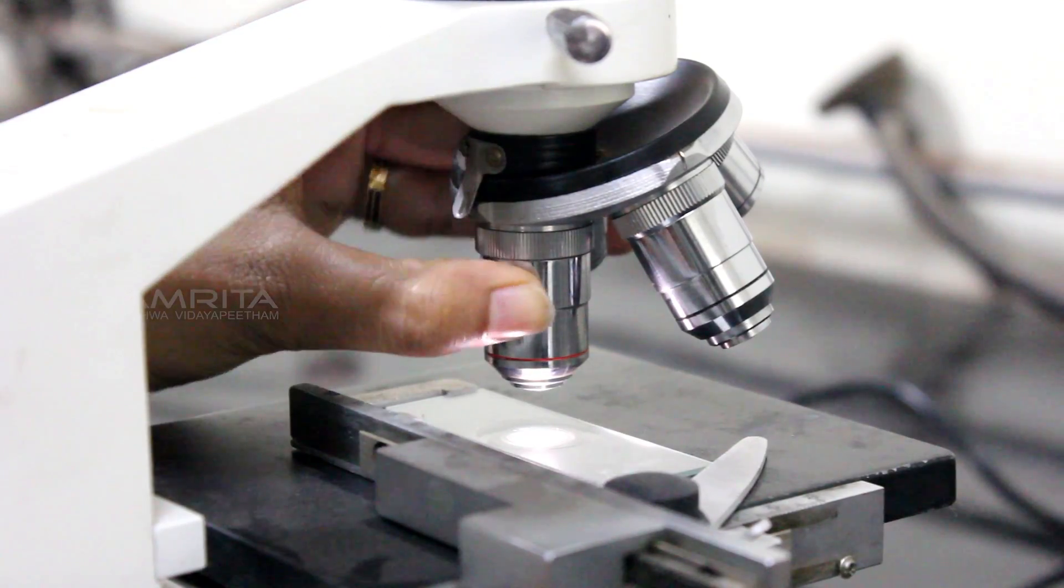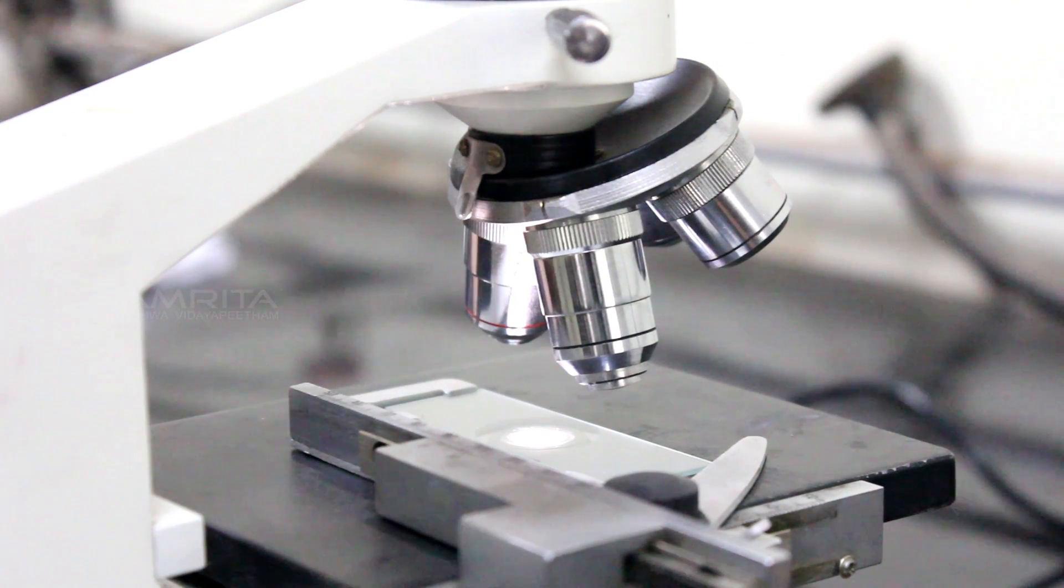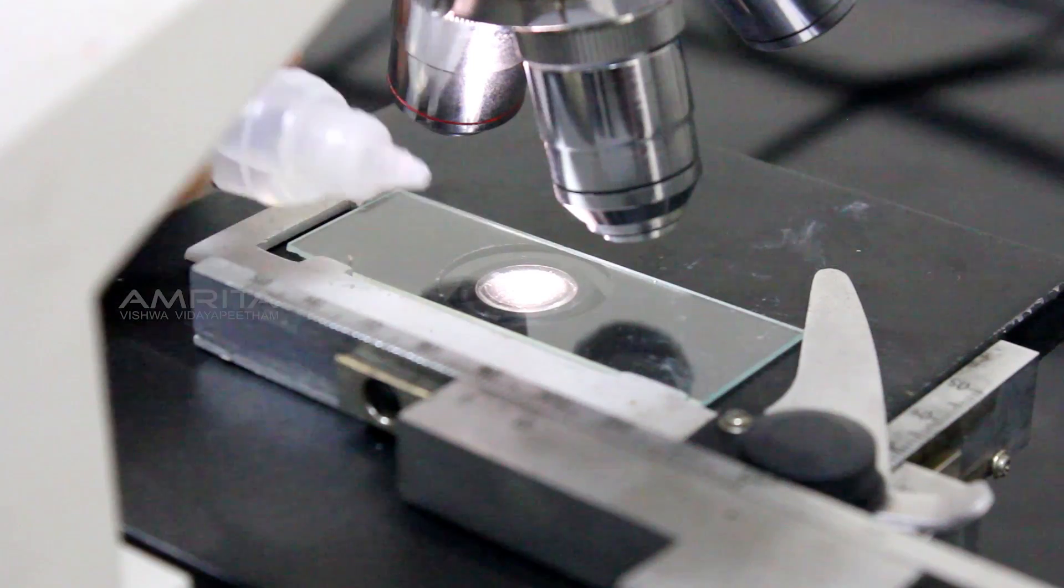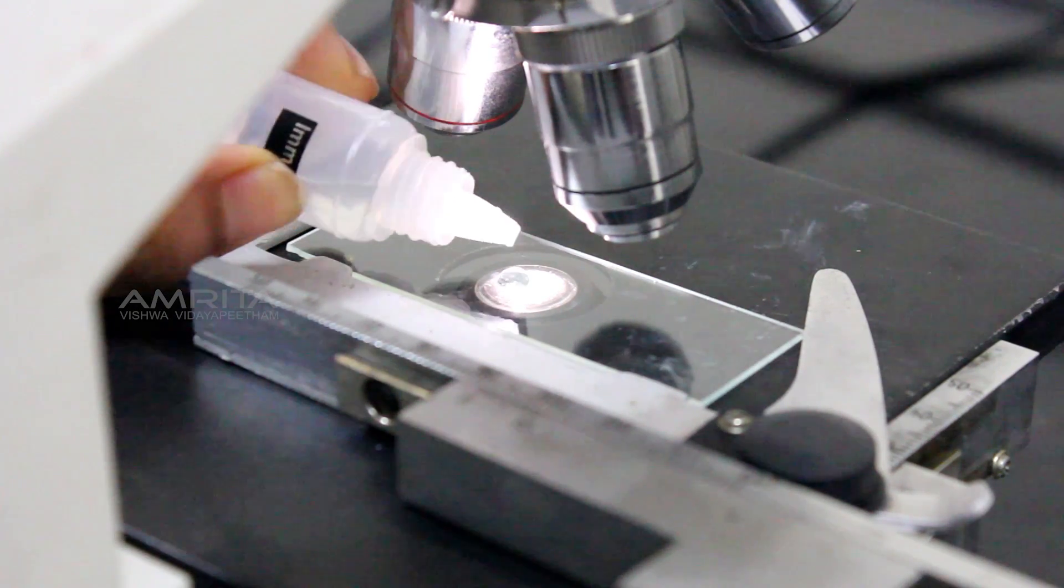Then rotate the nose piece of the microscope in such a way that the specimen is in between 40x and 100x objectives and add a small drop of oil on the centre of the slide.